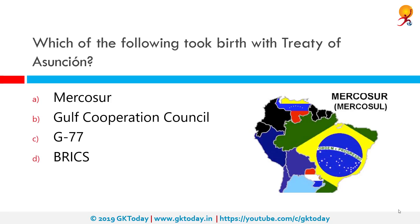Which of the following took birth with the Treaty of Asunción? The correct answer is Mercosur. Mercosur is a sub-regional block of South American countries whose purpose is to promote free trade and the fluid movement of goods, people and currency. It was established in 1991 and its headquarters are located in Montevideo, Uruguay. It calls itself the common market of South America.